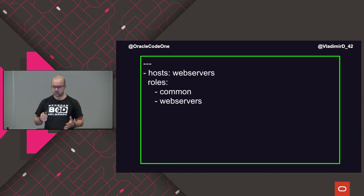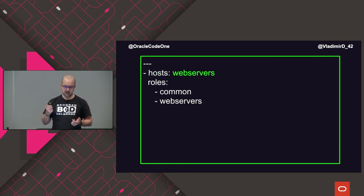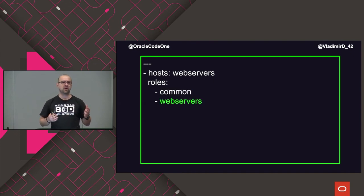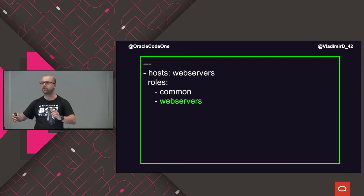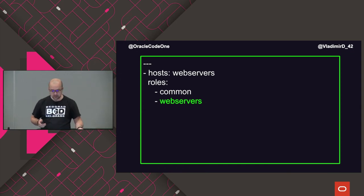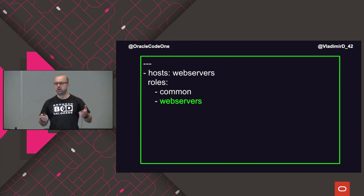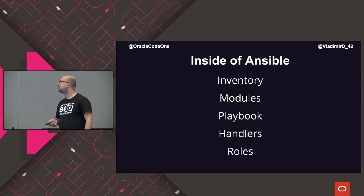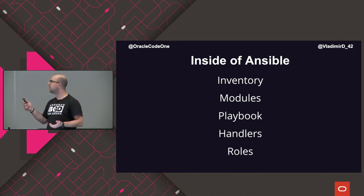Here's how to use a role in a playbook — it's very simple. We define the hosts — in this case web servers — and then list all the roles we want to use. In this case we're using two roles: 'common' for common stuff, and then a specific web server role for things like setting up the load balancer, opening ports, DNS, and so on. So we use roles to create reusable blocks that we can use throughout our codebase.